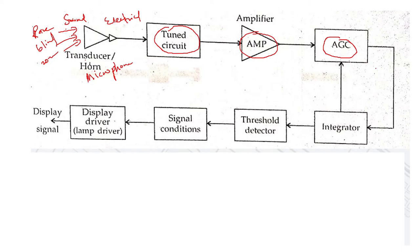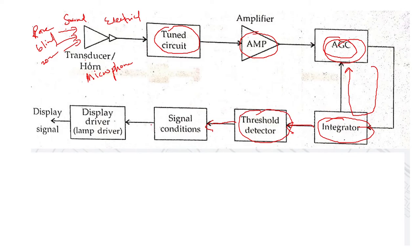There is a loop system here with an integrator and feedback for automatic gain control. The signal is integrated and checked against a proper voltage level by a threshold detector, then properly conditioned, amplified, and filtered. It is then given to the lamp driver, which drives the display in front of the driver.